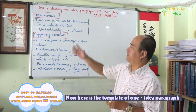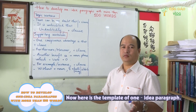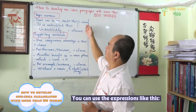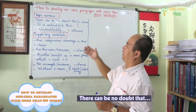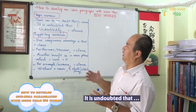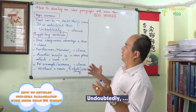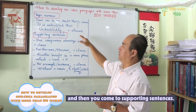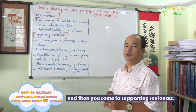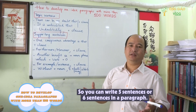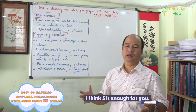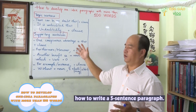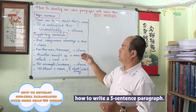Here is a template for you. A one-idea paragraph begins with the topic sentence. You can use expressions like 'there can be no doubt that,' 'it is undoubted that,' or 'undoubtedly,' followed by a clause. Then you come to the supporting sentences — you can write five or six sentences in a paragraph. Five is enough.